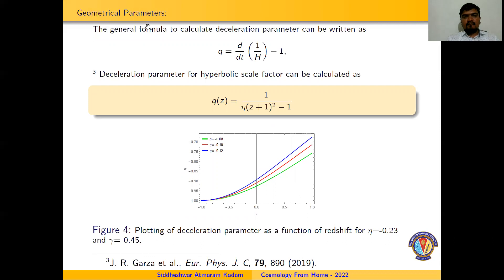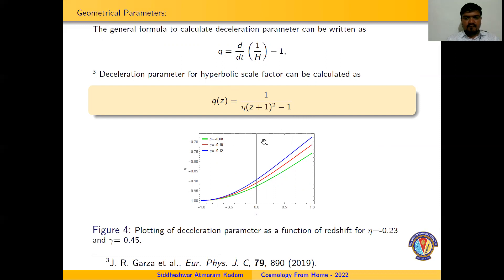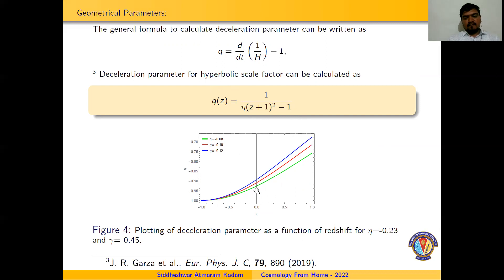We have also studied the geometrical parameters. The general formula for the deceleration parameter can be written as d/dt(1/H) − 1. For our scale factor, the deceleration parameter is obtained as 1/(η(z+1)²) − 1. From the graphical representation in figure 4, the deceleration parameter lies in the negative region, confirming the accelerating behaviour of the model, and approaches −1 at late time, supporting the ΛCDM model.